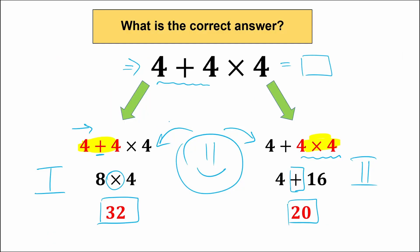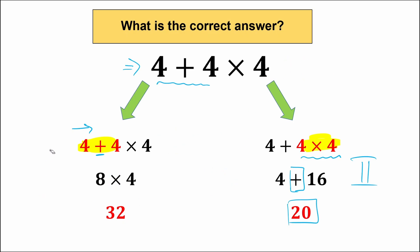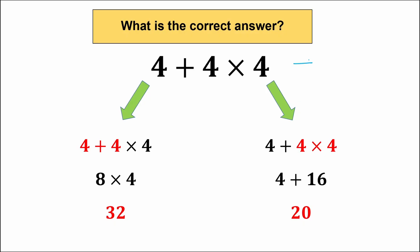But before this, let's go back, because as I said, we can't solve this question with two different answers. Let's practice our order of operations real quick. Every time you have an algebraic expression, I recommend you draw this quick checklist. In our case: PEMDAS — Parentheses, Exponents, Multiplication, Division, Addition, and Subtraction. This order of operations works from the top to the bottom.